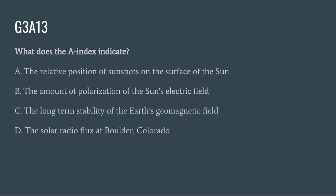G3A13: What does the A-index indicate? A. The relative position of sunspots on the surface of the Sun. B. The amount of polarization of the Sun's electric field. C. The long-term stability of the Earth's geomagnetic field. Or D. The solar radio flux at Boulder, Colorado. The correct answer is C: the long-term stability of the Earth's geomagnetic field.